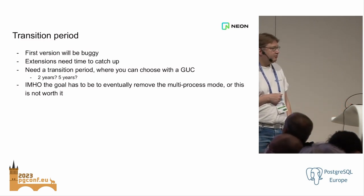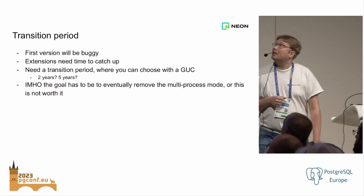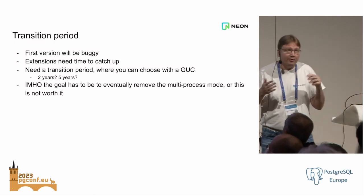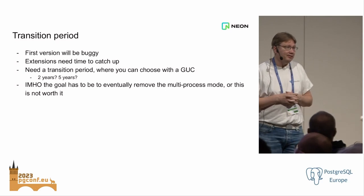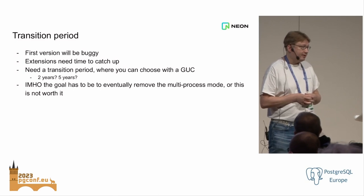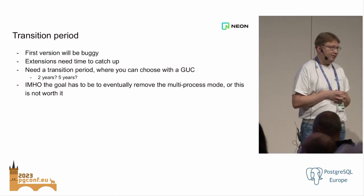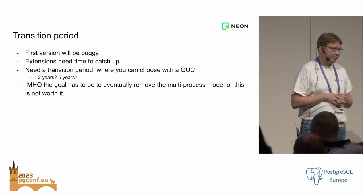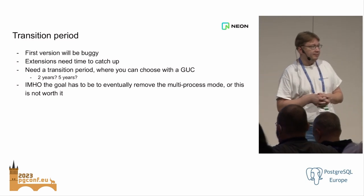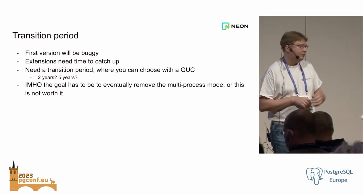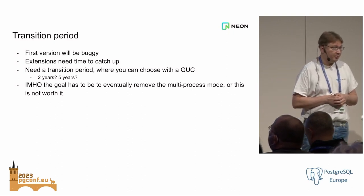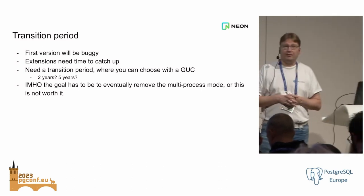So there will be a transition period. The first version will be buggy, and extensions will need to catch up. My thinking is that we'll need a GUC you can set in the Postgres config file: threads or processes — simple as that. You can set it if you're brave. And then after a few years, we'll deprecate the old model. And then, if you're brave, you'll stick to the old model, but everyone will be using threads. Finally, we'll say, okay, this is stable enough — we can kill the old model and switch to threads altogether, removing the code to support multiprocess mode.